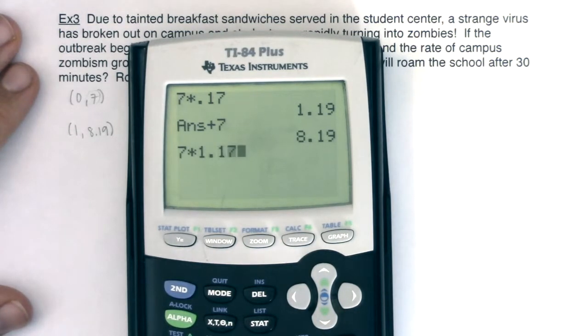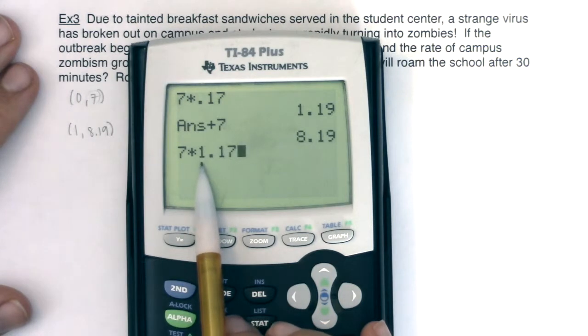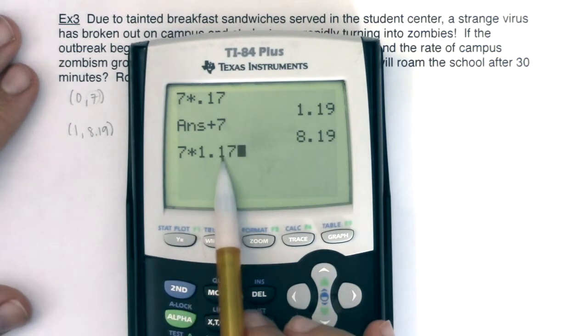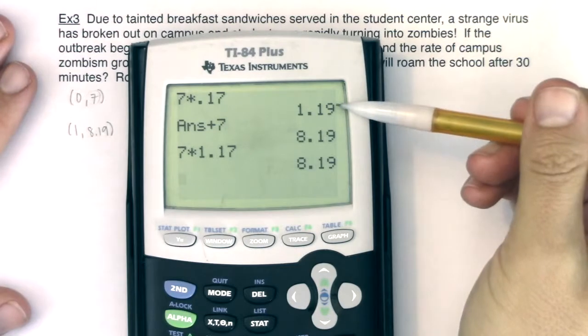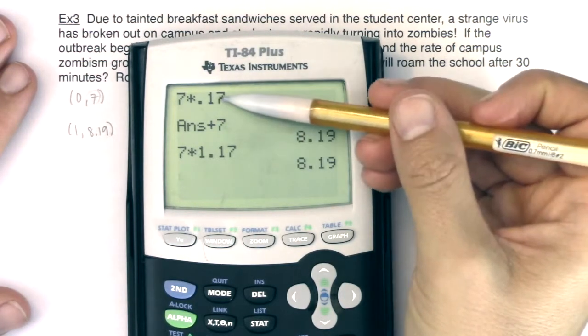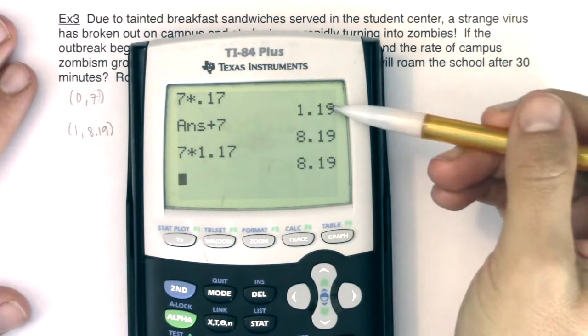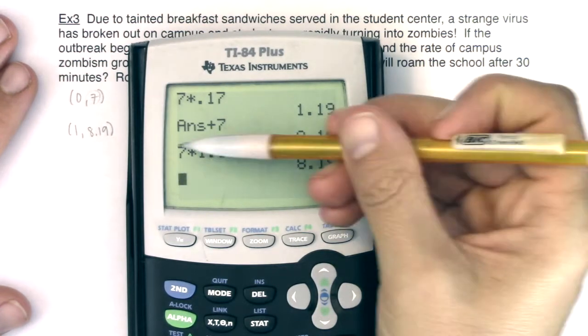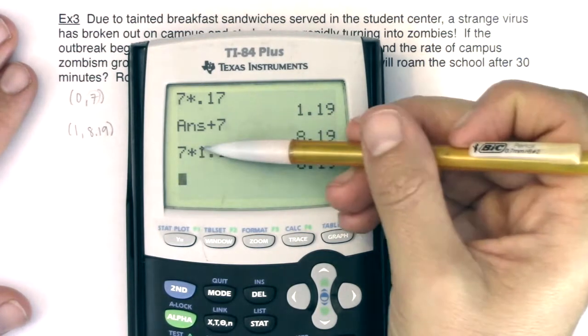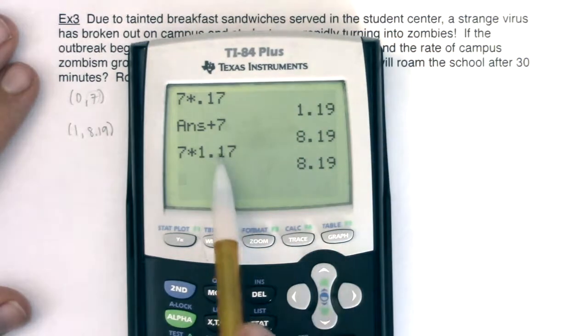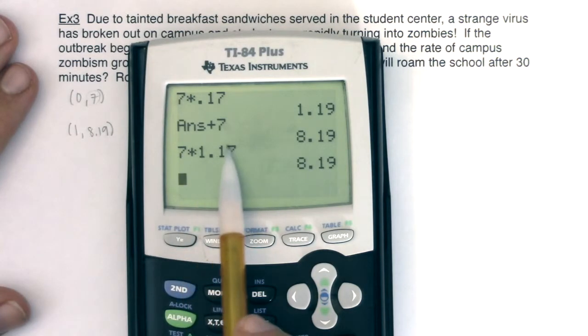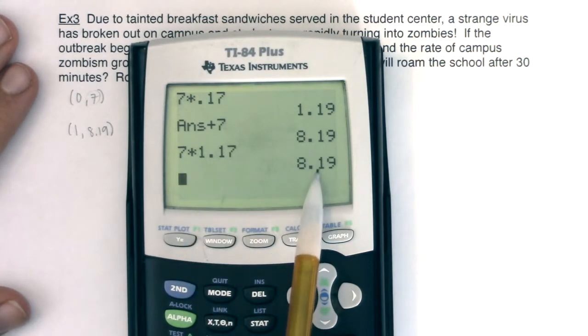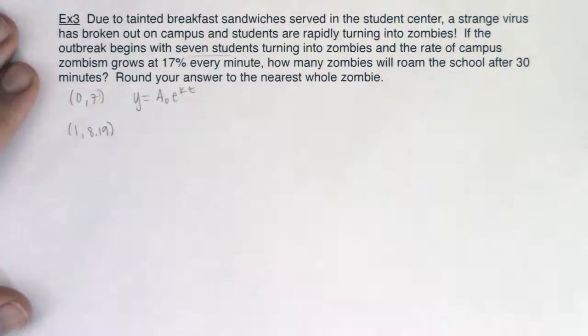This is how many I grew by in that extra minute and then I add that to my initial amount. When I say be more efficient this is what I do: I take seven and I multiply it by 1.17 because if you remember one is equilibrium, that keeps you at seven, and then I'm going to add 17% to that and that gets me to 8.19.